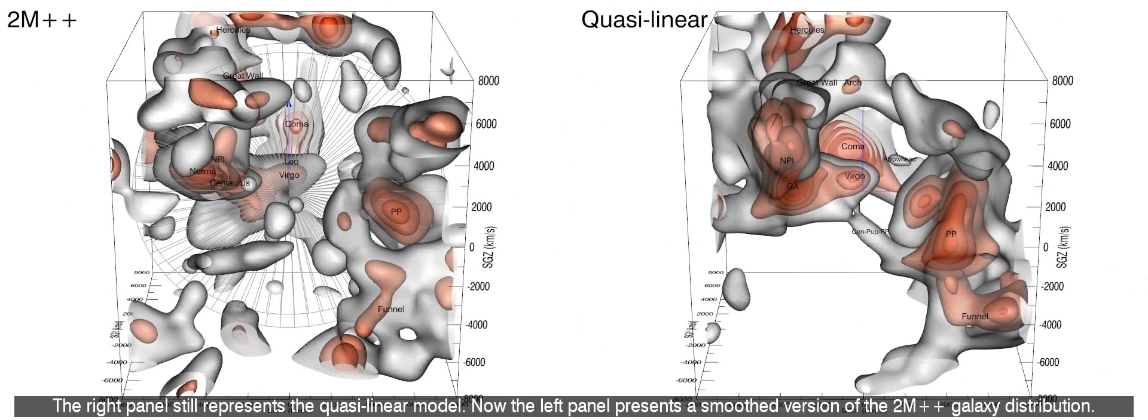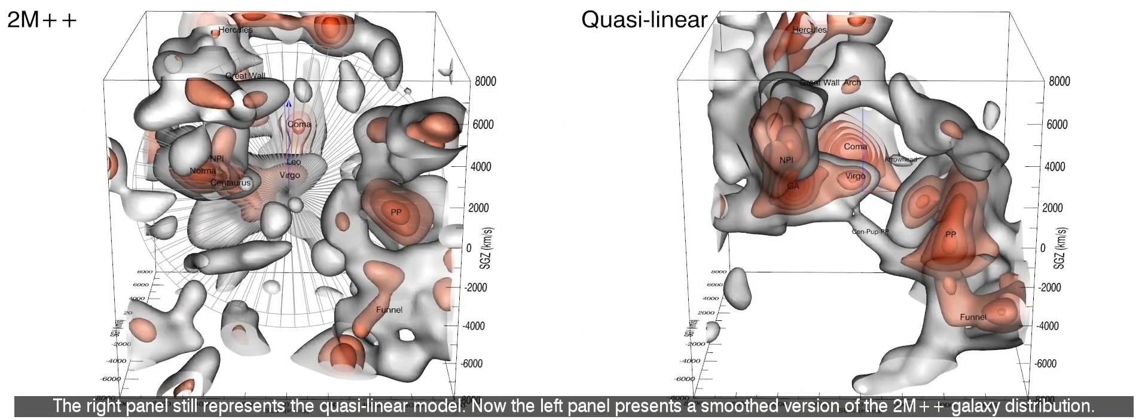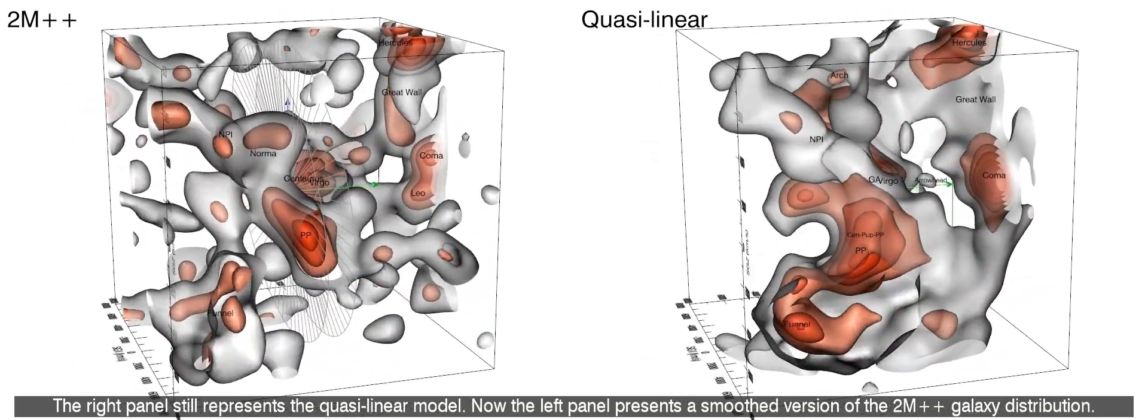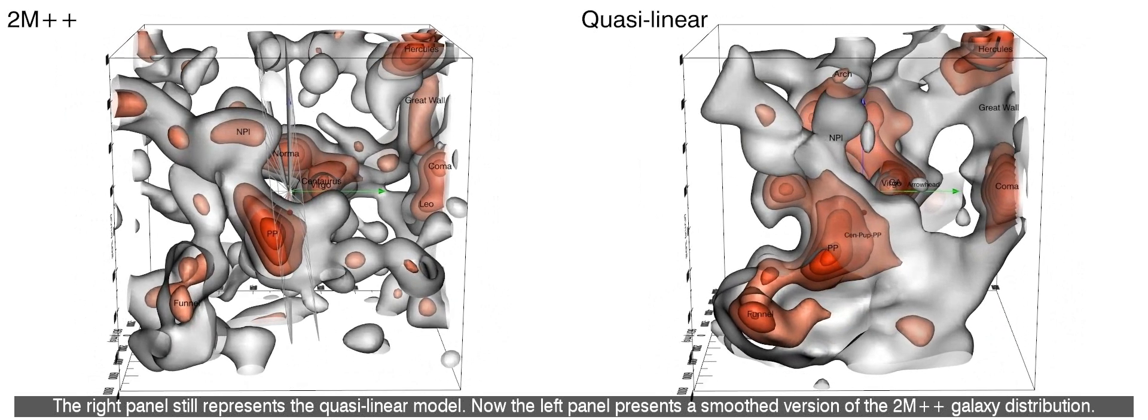The right panel still represents the light. The left panel presents the quasi-linear model. Now the left panel presents a smoothed version of the 2M++ galaxy distribution.